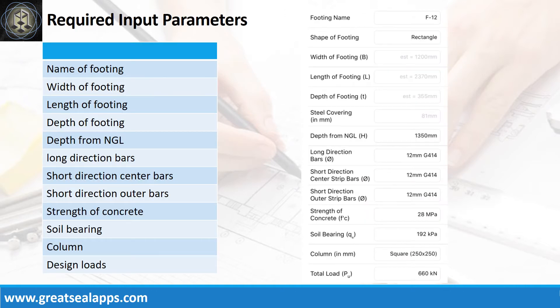Enumerating the input parameters required: footing name F12, shape of footing rectangle, depth from natural grade line 1,350 mm, long direction bars 12 mm bar at grade 414, short direction bars 12 mm bar at grade 414, strength of concrete 28 MPa, soil bearing capacity 192 kPa, column size 250 mm x 250 mm, and factored axial load 660 kN.